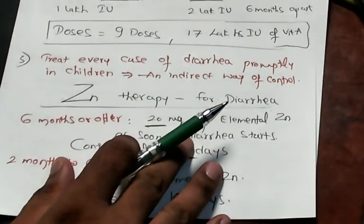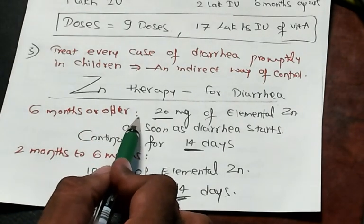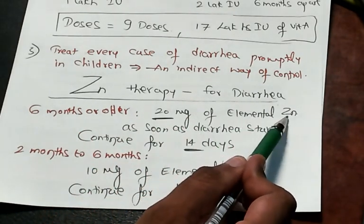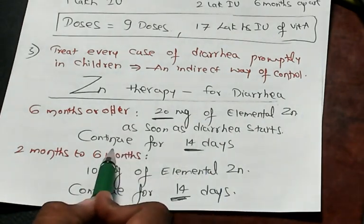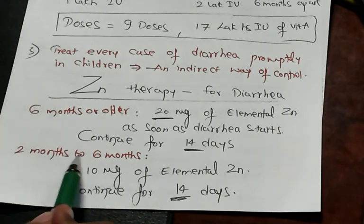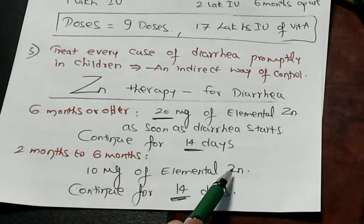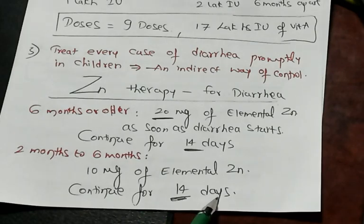How do you give zinc therapy? 6 months or older, 20 milligrams of elemental zinc as soon as diarrhea starts and continued for 14 days. 2 months to 6 months, 10 milligrams of elemental zinc, continue for 14 days.